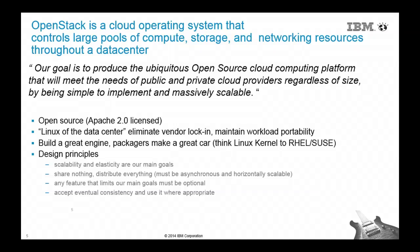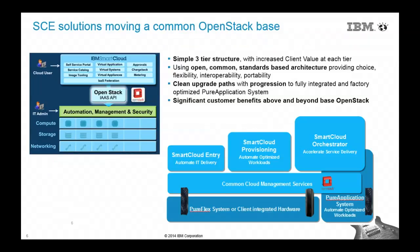From IBM's perspective, we were looking for a very simple three-tier approach. On the bottom we had all the PureFlex systems from IBM. The common components from OpenStack would manage all of those resources. And then on top of that we would install Smart Cloud Entry, Smart Cloud Provision, and Smart Cloud Orchestration to add value to customers — just adding value to what OpenStack had to offer.